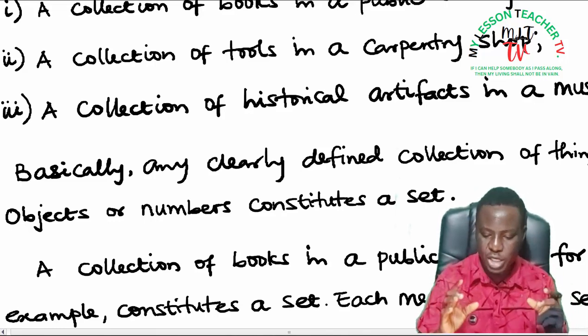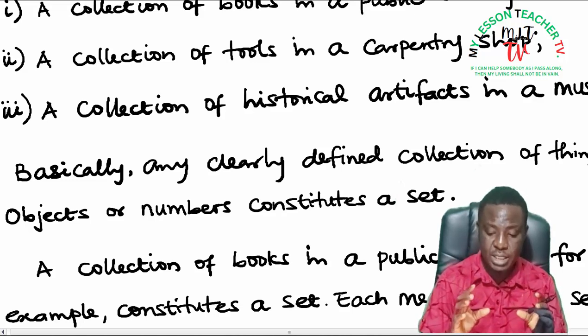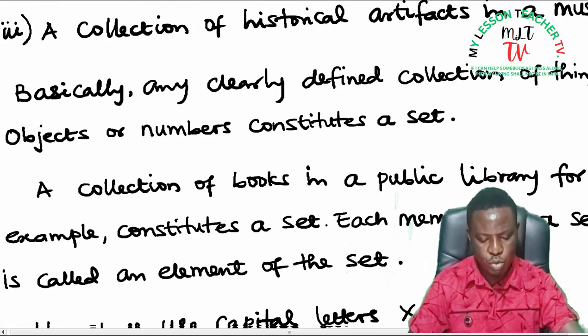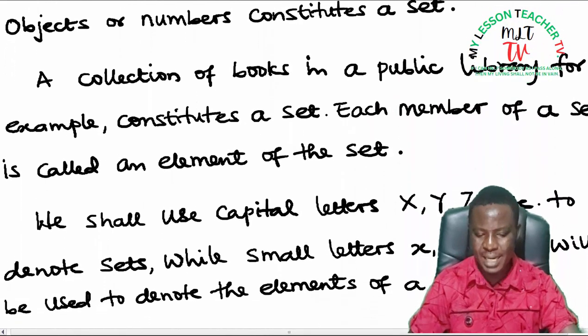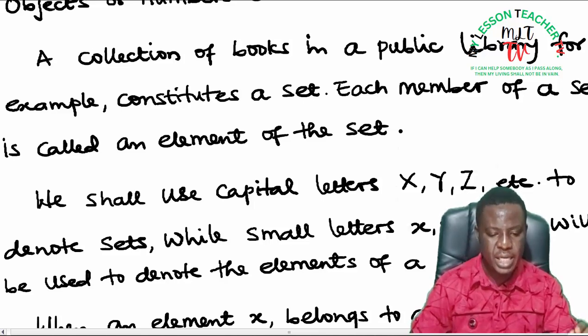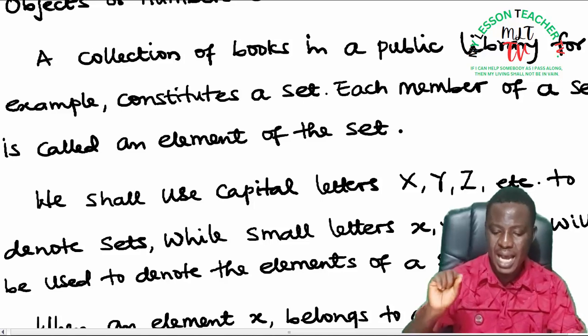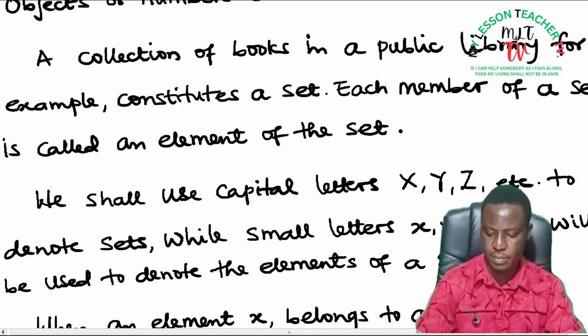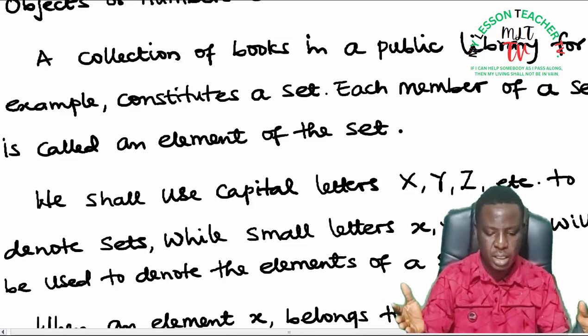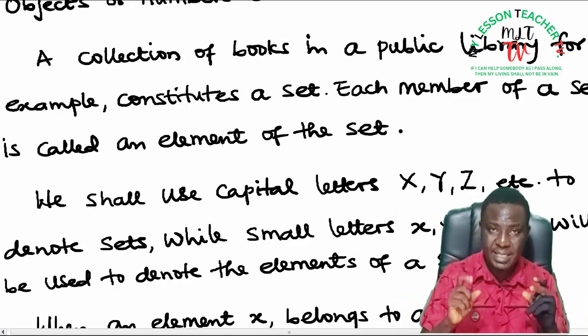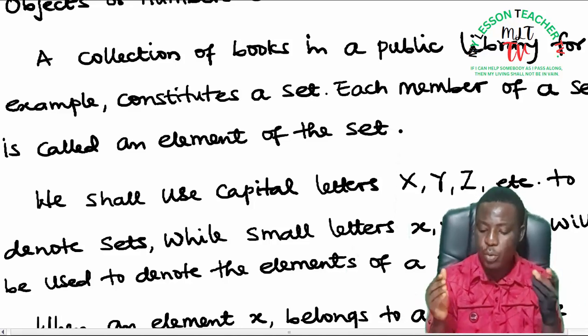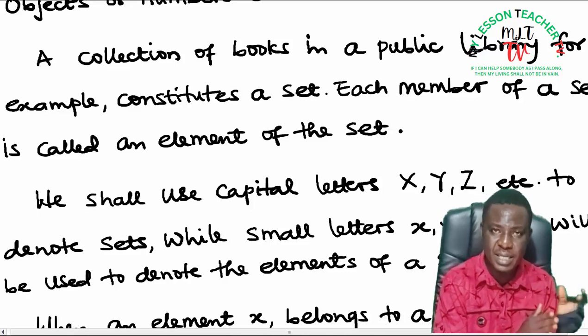So any clearly defined collection of things, objects or numbers constitute a set. A collection of books in a public library, for example, constitutes a set. Each member of a set is called an element of the set. We shall use capital letters X, Y, Z to denote sets, while small letters x, y, z will be used to denote the element of a set.